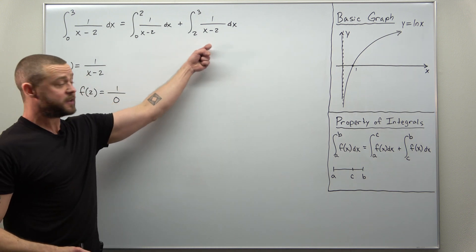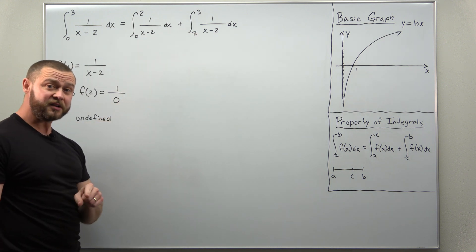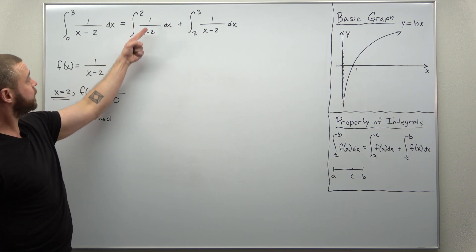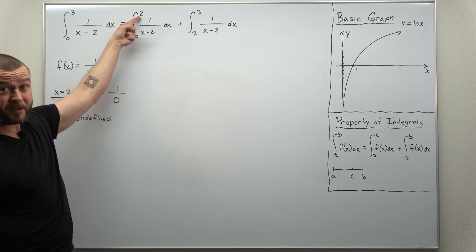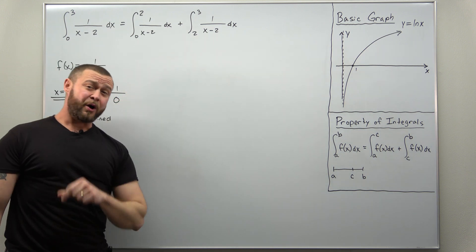Both of these improper integrals become undefined at one of their endpoints. Here this improper integral becomes undefined at the upper limit when x is 2. This one becomes undefined at the lower limit when x is 2.